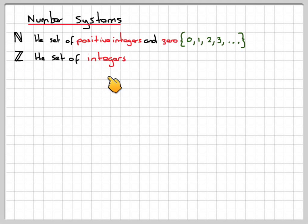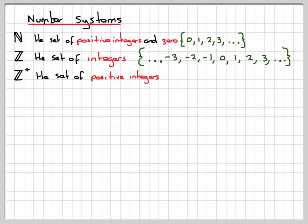Z is a set of integers, so all the negative ones, 0, and all the positive ones. Z plus is a set of positive integers, so that will just be the numbers 1, 2, 3. It's not going to include the number 0.